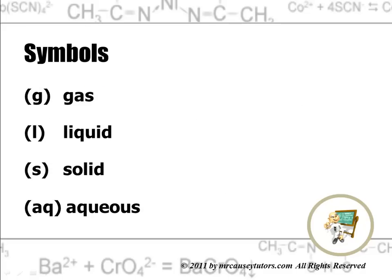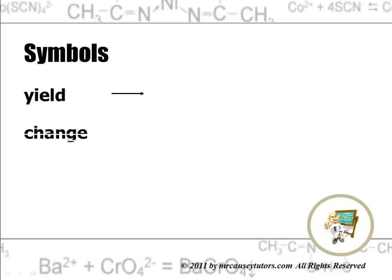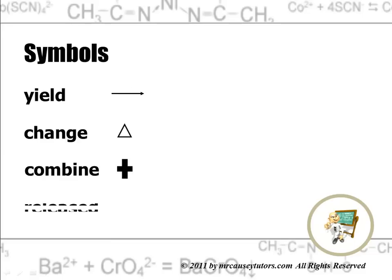One important symbol is aqueous, which just means dissolved in water. We use these symbols to tell us what state or form the different compounds are in. Yield and change — that is the delta symbol, the Greek letter delta — and we use that to show change. A plus sign means combine. And then we have an up arrow to show a gas is released; we use that to show the gas wasn't collected but was released into the atmosphere.